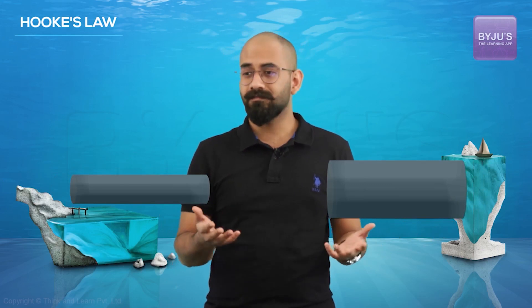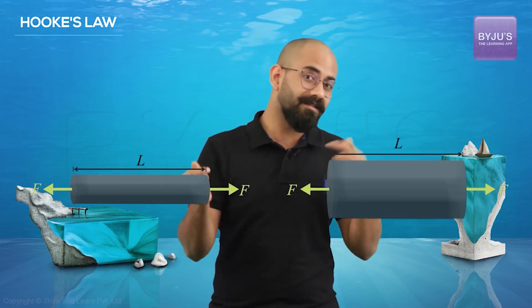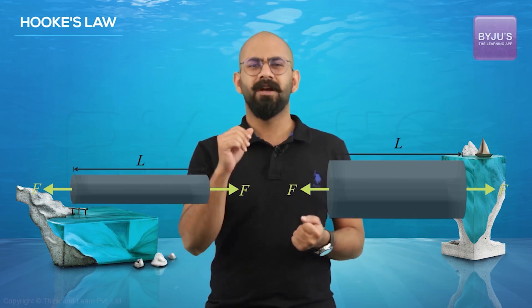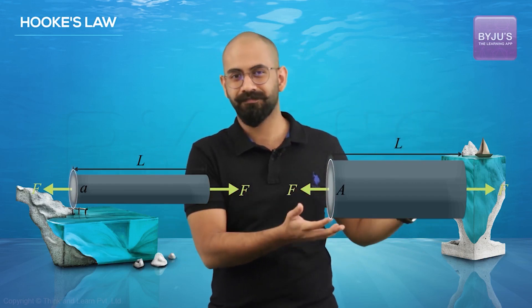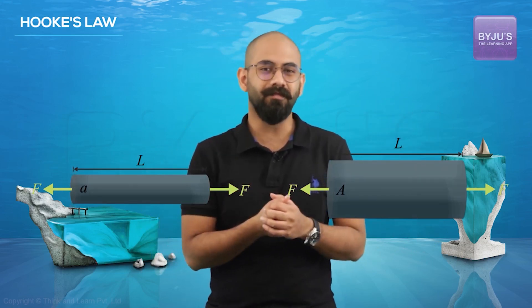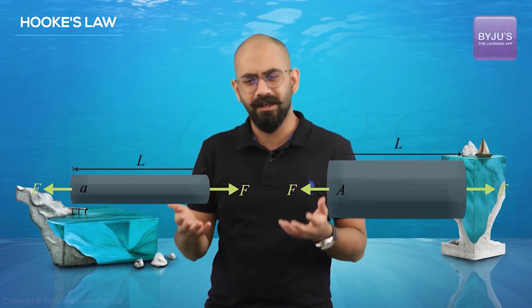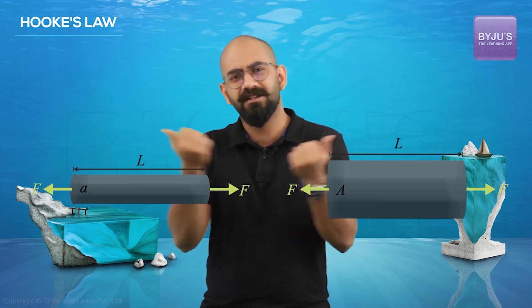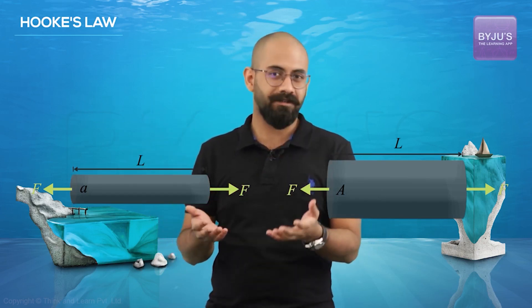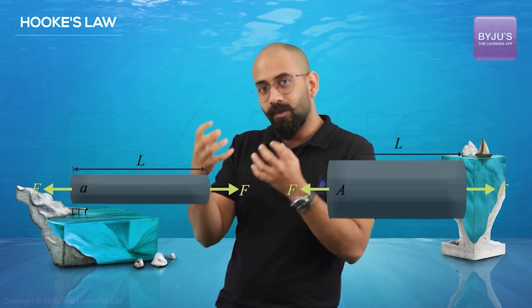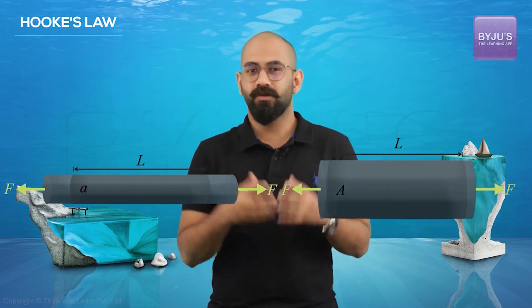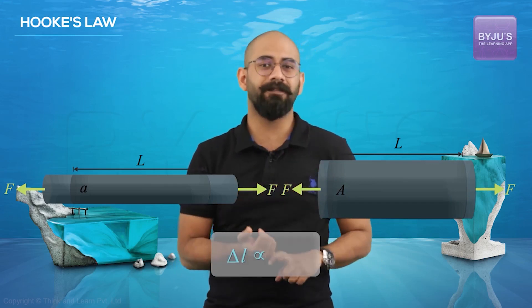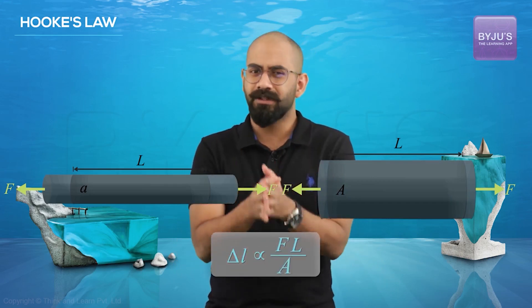Now what about area? Say I have two rods of the same length with the same force applied, but one has a smaller area of cross-section and the other a larger one. The one with a smaller area of cross-section is easier to pull, so delta L will be greater. The one with the larger area of cross-section will have a smaller delta L.